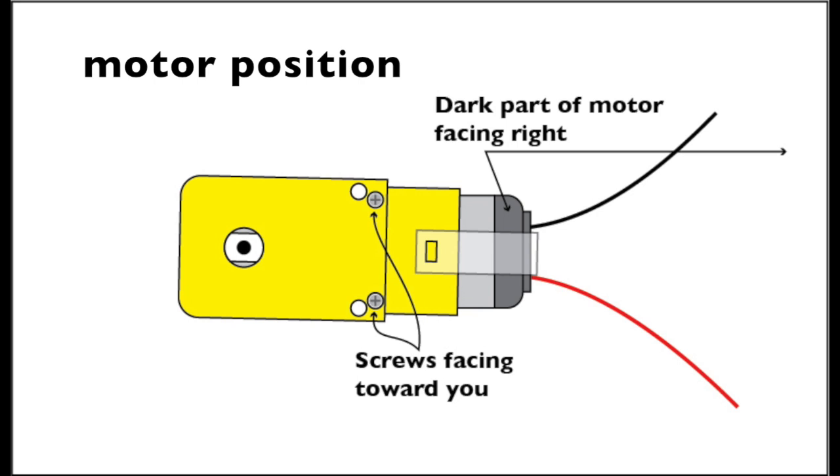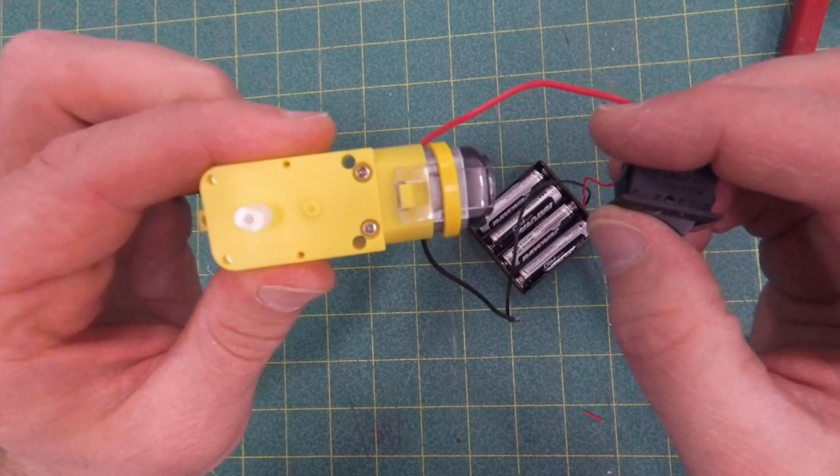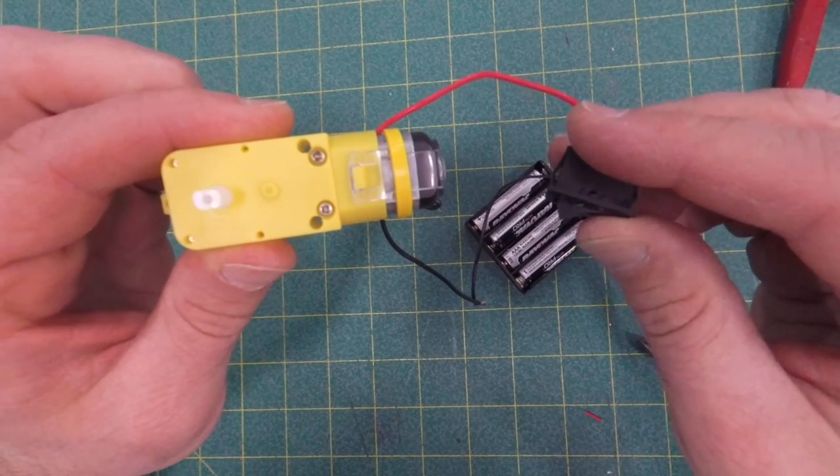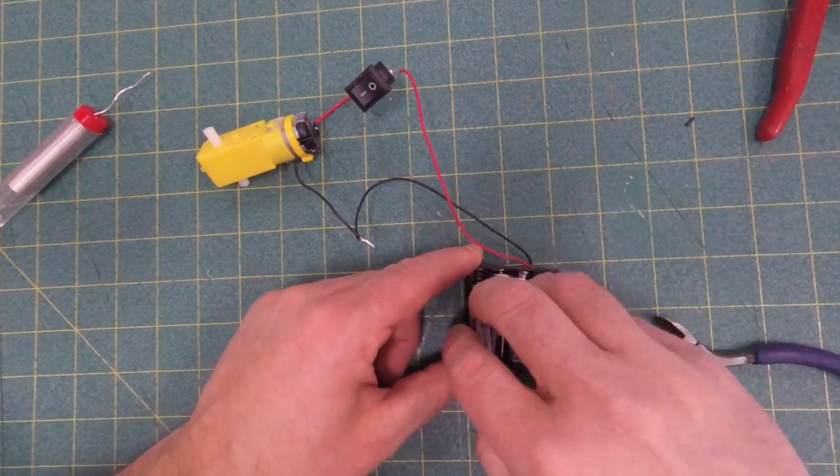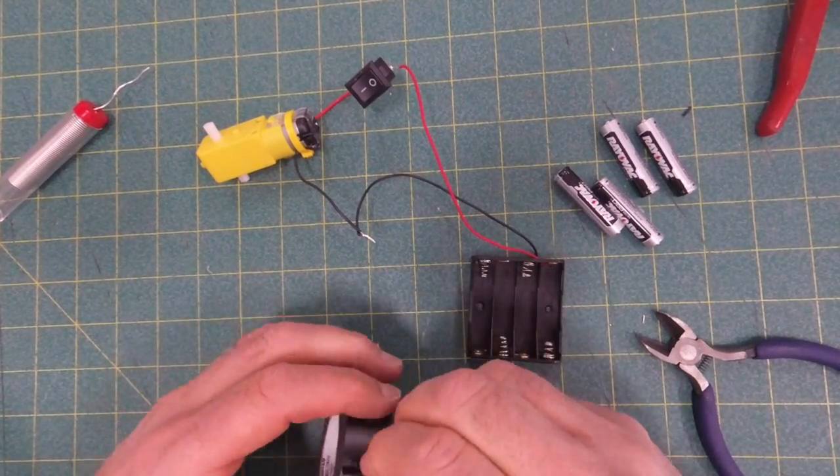The axle should be spinning clockwise, so I turn it on. You can see the axle is spinning clockwise when I'm looking at the motor in the right orientation. Make sure you're there. Remove the batteries again so you don't cause any kind of a short circuit.